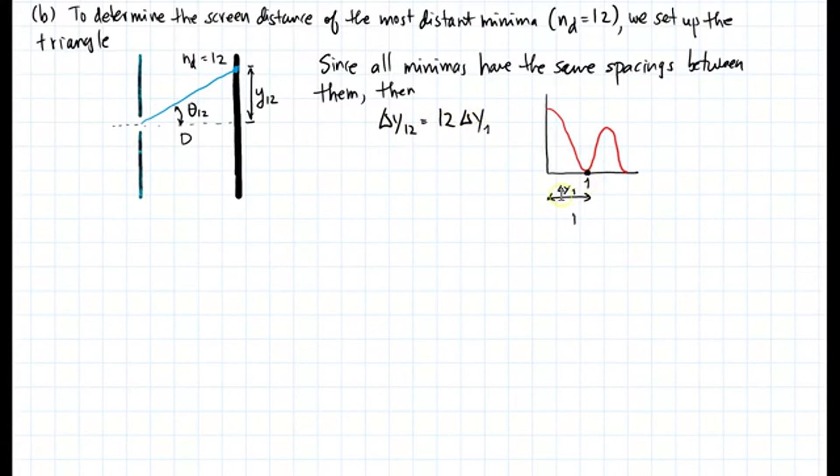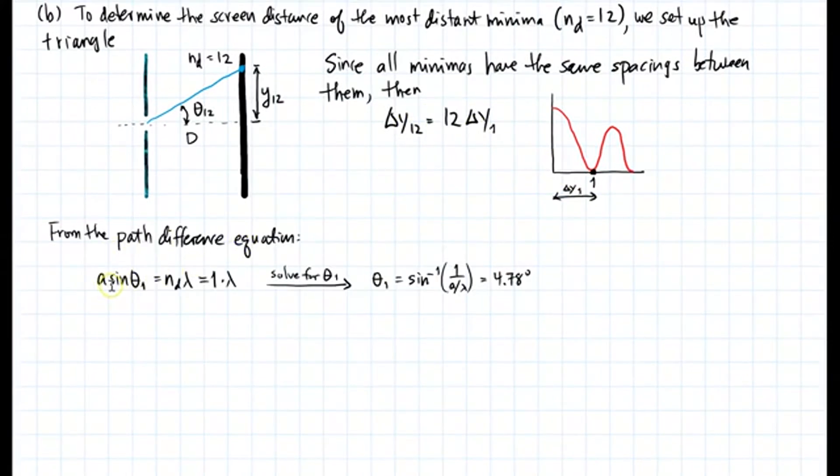If I calculate this distance, then I multiply that by 12 to get that distance. The path difference equation: A sine theta 1 is equal to 1 times lambda. If I solve for theta 1, I get theta 1 is the sine inverse of 1 over the diffraction parameter, which gives me 4.78 degrees.